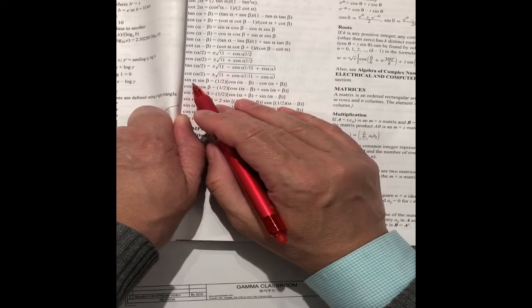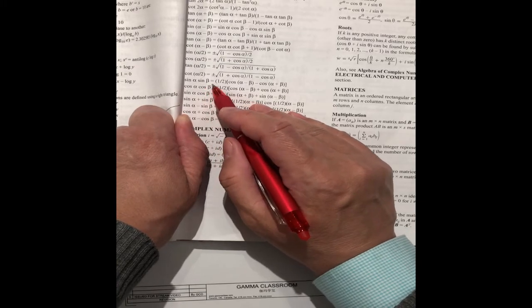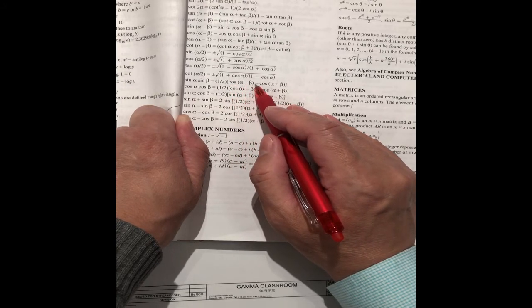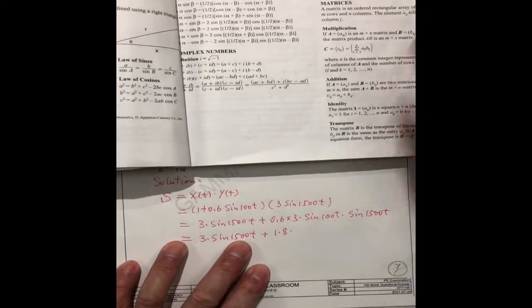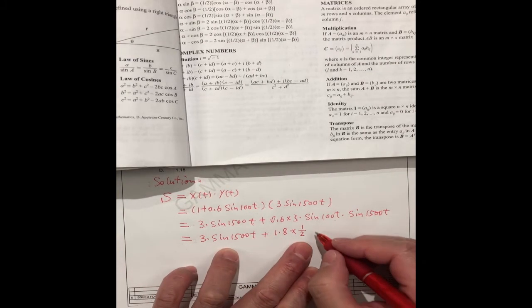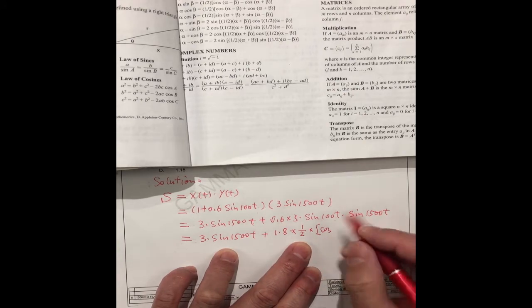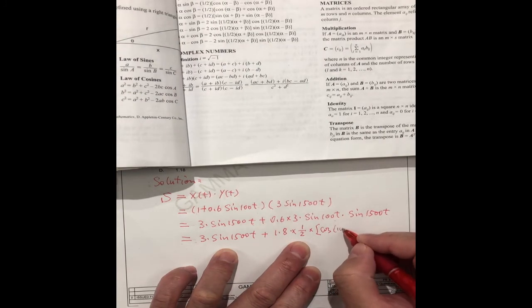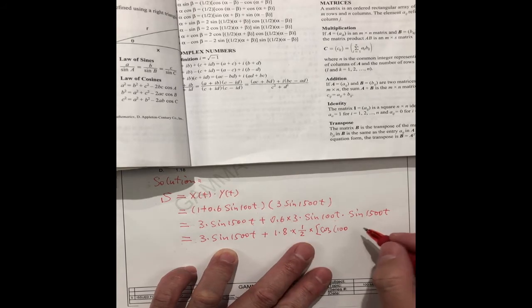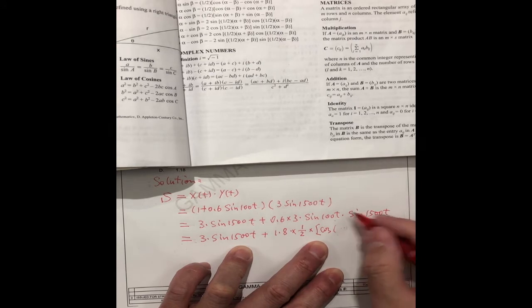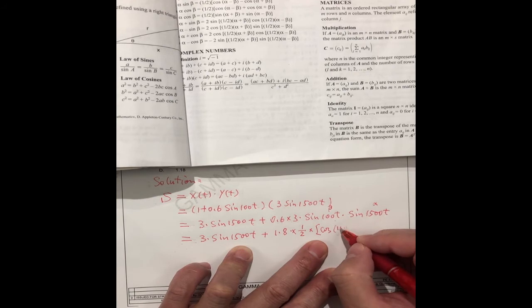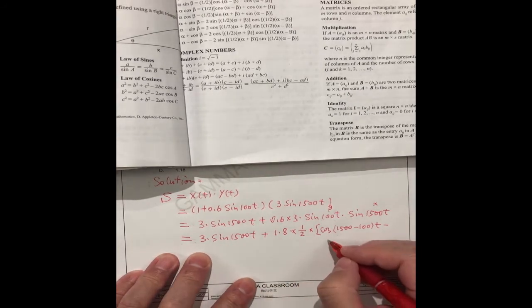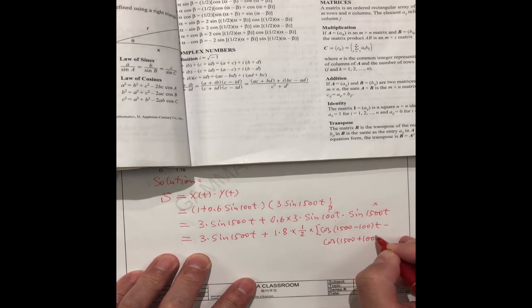You see sin(alpha) times sin(beta) equals 1/2[cos(alpha - beta) - cos(alpha + beta)]. Alpha means this one, 100. We can use 1500 as alpha, this is beta. It's easy: 1500 - 100 is t, and minus cos(1500 + 100)t.